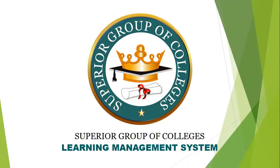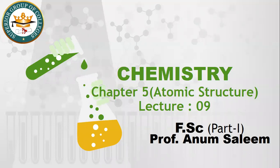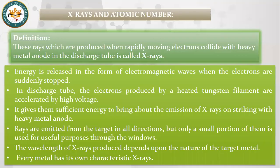Bismillahirrahmanirrahim, welcome to Superior Group of Colleges Learning Management System. Students, today we will start Chapter 5, Lecture 9, which is about X-rays. X-rays are defined as the rays which are produced when rapidly moving electrons collide with the heavy metal anode in the discharge tube. When fast-moving electrons strike the anode or anti-cathode particles, rays are produced — these are called X-rays — and energy is also produced.